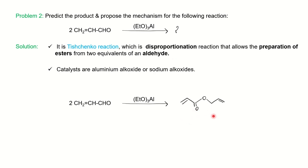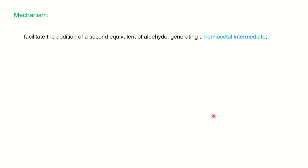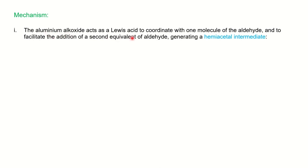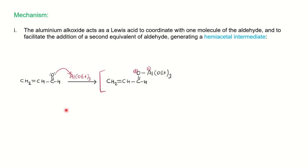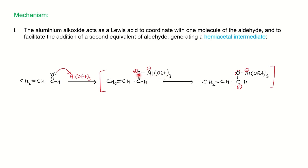Whenever you see aluminium ethoxide or sodium ethoxide or methoxide with two molecules of an aldehyde, think of the Tishchenko Reaction — disproportionation occurs instead of reduction. In the first step, aluminium ethoxide acts as a Lewis acid and coordinates with one molecule of the aldehyde, facilitating the addition of a second equivalent. A coordinate bond forms between the electronegative oxygen of the aldehyde and the electropositive aluminium, with oxygen gaining a positive charge and aluminium gaining a negative charge.